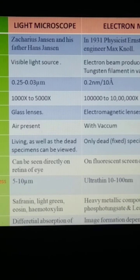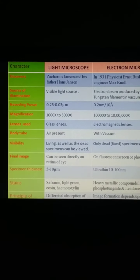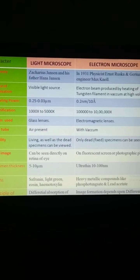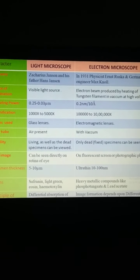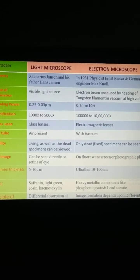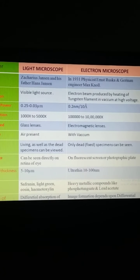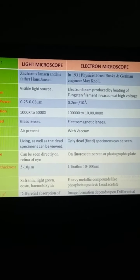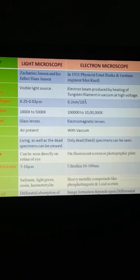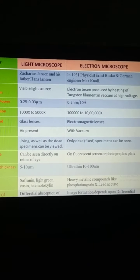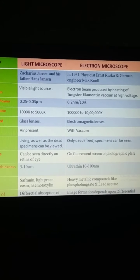Regarding specimen thickness: in the case of light microscopy, sections should be between 5 to 10 microns. But in electron microscopy, sections must be very, very thin — ultra-thin — between 10 to 100 nanometers. We cut such sections with an instrument called an ultra-microtome. The dyes or stains used in light microscopy include safranin, light green, eosin, and hematoxylin. In electron microscopy, we use heavy metallic compounds like phosphotungstic acid or lead acetate.